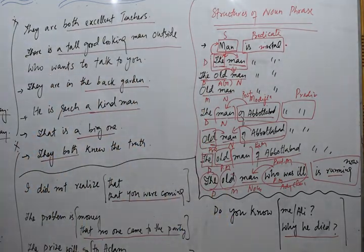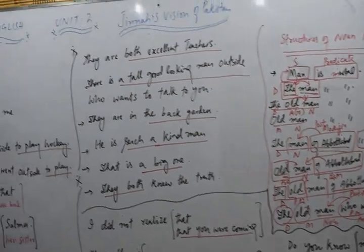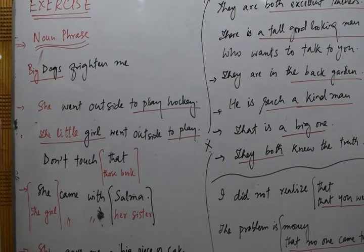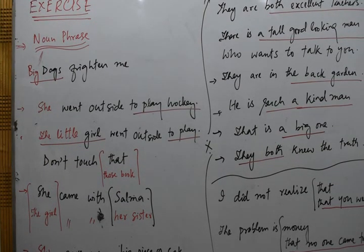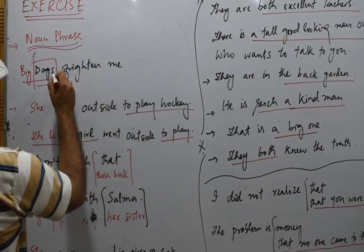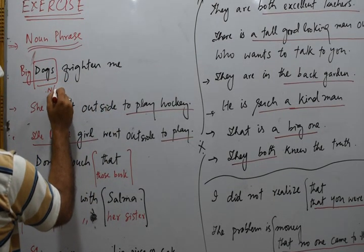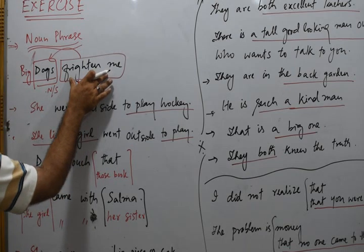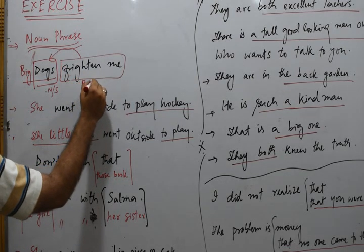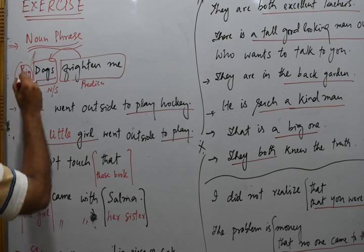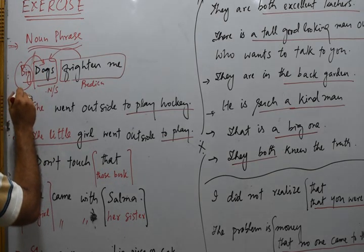Now let's take a start from your book. We have noun phrase examples from page 29. For example, 'Dogs frighten me' — 'dog' is a noun which is also the subject, and 'frighten me' is the predicate. If we add 'big,' we get 'big dog' — here 'big' is basically an adjective but works as a pre-modifier. So 'big dogs' becomes a noun phrase replacing the simple noun.